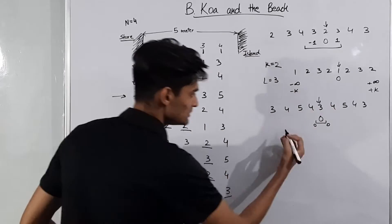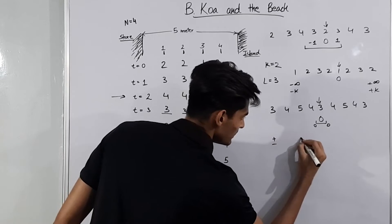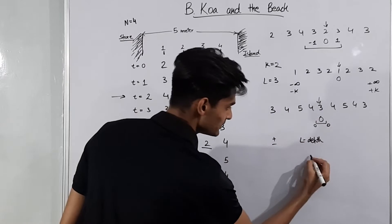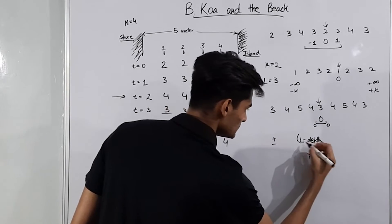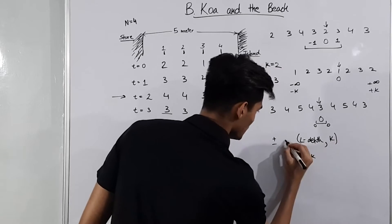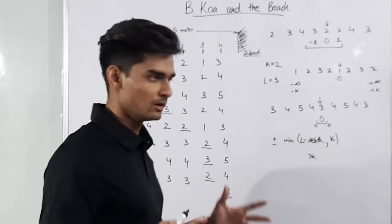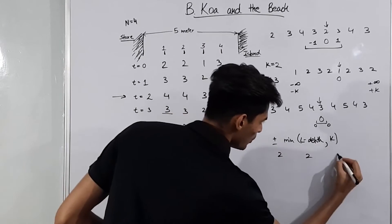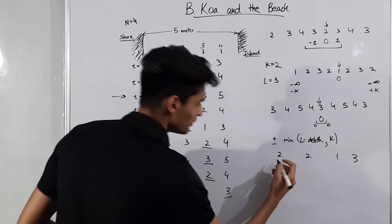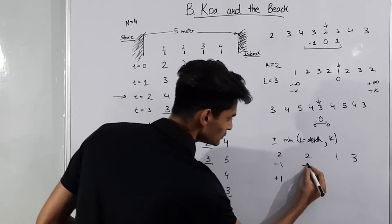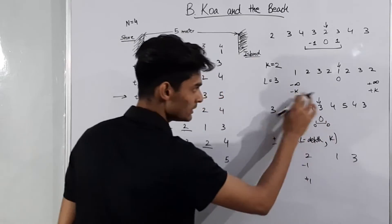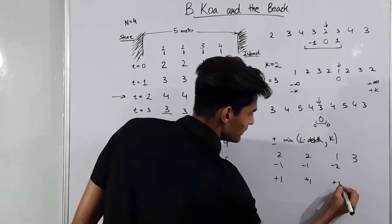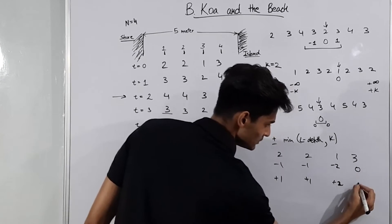The range for each point is ±(k - depth). When k minus depth is greater than k, we cap it at k, so the range becomes ±min(k - depth, k). Applying this to our example with depths 2, 2, 1, 3: the range for depth 2 is -1 to +1, for the second depth 2 also -1 to +1, for depth 1 it is -2 to +2, and for depth 3 it is 0 to 0.